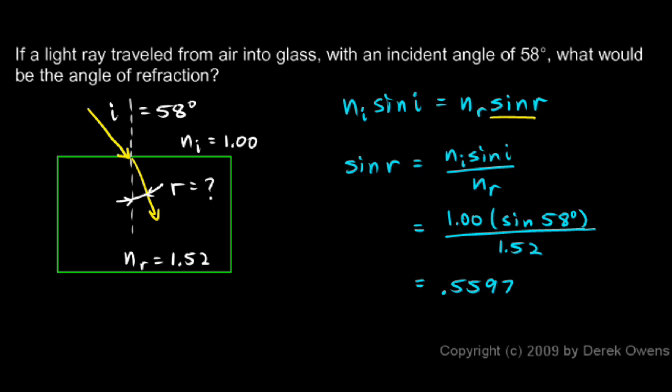Now that's not your answer. What you just found was the sine of r, and sine of r is 0.5579. We have to find r. If the sine of r is 0.5579, then r will be the inverse sine of 0.5579.